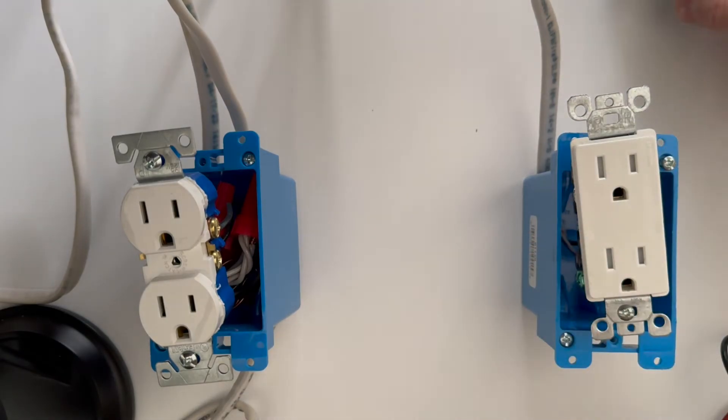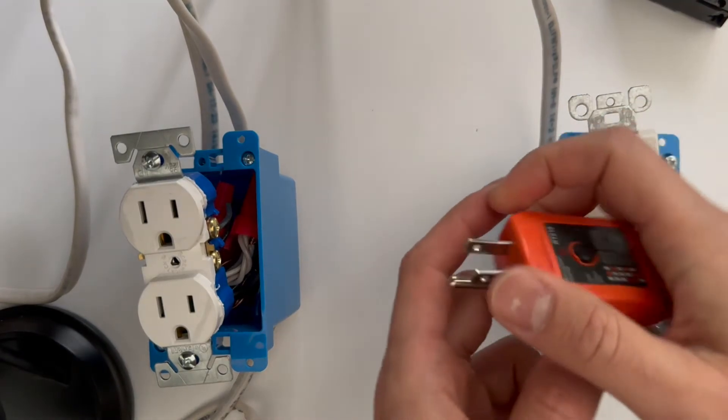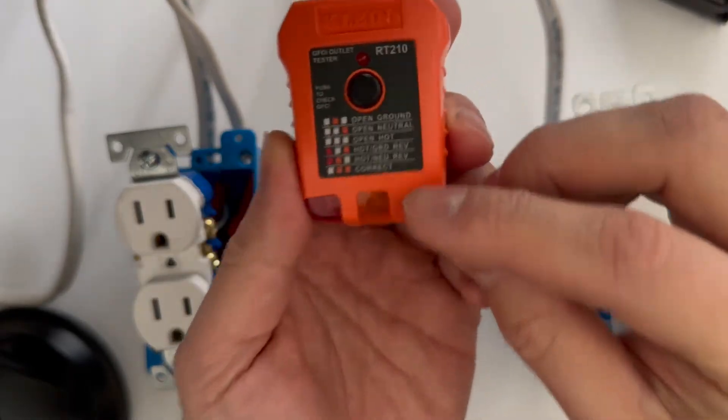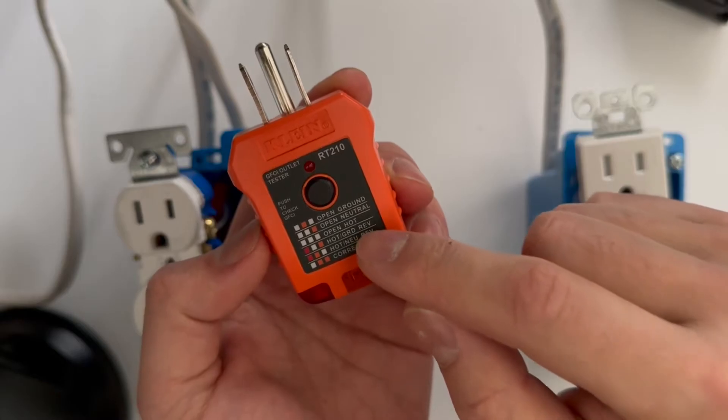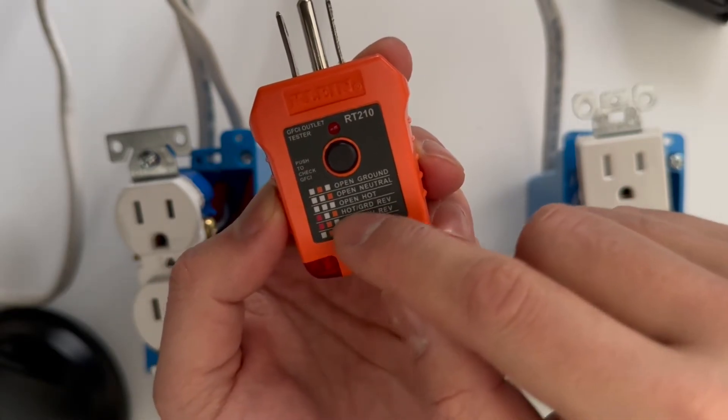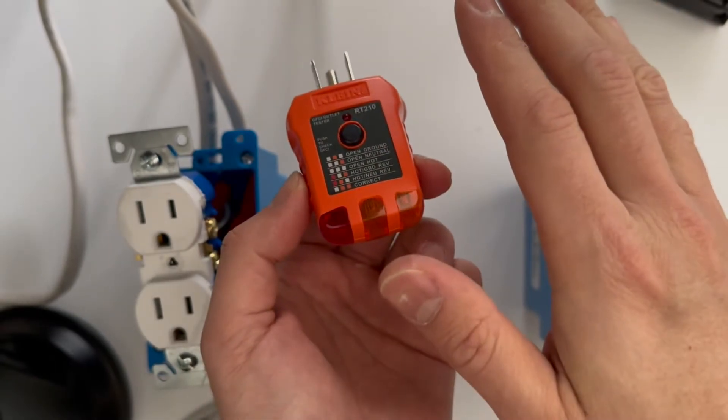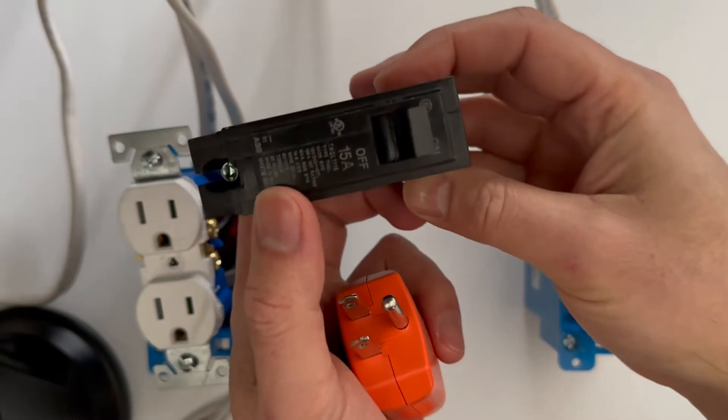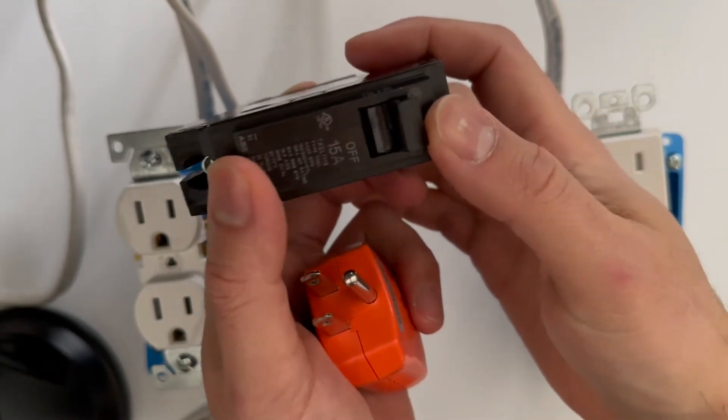All right guys, so I want to show in this video how to troubleshoot an open neutral. A lot of people use this tester where it will show hot and ground reversed. First thing we need to make sure is that the breaker is on. A lot of times you'll make sure the breaker is on and try to reset it.